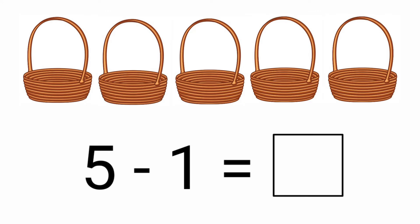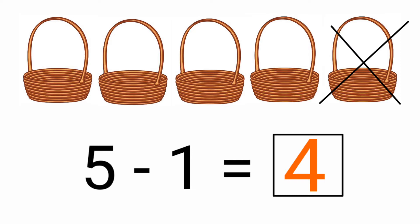Look at the next picture. How many baskets are there? 5 baskets. Here we need to subtract 5 minus 1, so we need to subtract only 1 basket from the 5 baskets. Let's subtract only 1 basket. How many baskets are left? Only 4 baskets are left: 1, 2, 3, 4. The answer is 4. 5 minus 1 equals 4. Let's write the answer in the given box.